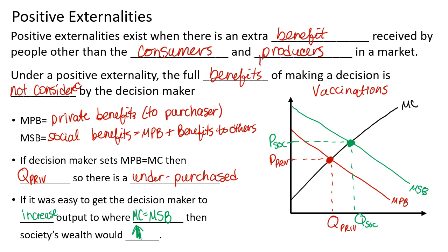We also need to discuss the deadweight loss caused by underproduction from a positive externality. All of these items cost a certain amount but have an actual benefit that is higher, making the triangle between them the deadweight loss. Because we're shifting everything in parallel, you could also compare the marginal cost to the assumed marginal benefit — either one, but not both, gives you the deadweight loss.